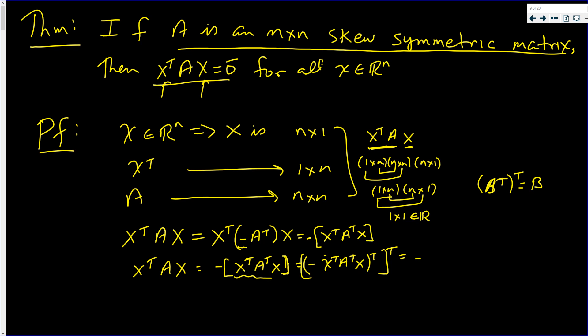So this here is equal to negative x transpose A transpose x, the whole thing transposed. The negative just stays there. And at the end, I'll transpose everything. So now we write it in reverse order, but we transpose things as we go along because of that transpose.